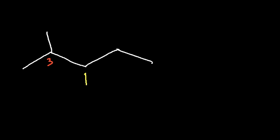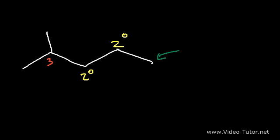Now what about this particular carbon atom? Would you describe it as primary, secondary, or tertiary? It's attached to two other carbon atoms, which makes it a secondary carbon atom. This carbon is also secondary. Now what about this carbon? Notice that it's only connected to one carbon atom, which means that it's primary. Anytime you see a carbon at the end, it's a primary carbon.